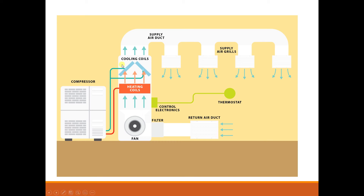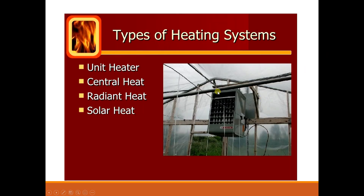In a centralized air conditioning unit, which was discussed previously, we were using a cooling coil only. Here we are also using a heating coil - in winter we need heating, not cooling, so the cooling circuit is switched off and the heating circuit is switched on. The return air from the duct is sensed by the thermostat and accordingly heating is adjusted in the heating coil so that we get hot air supplied to all buildings.